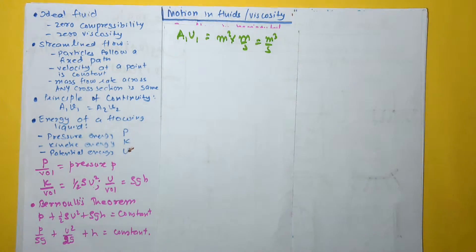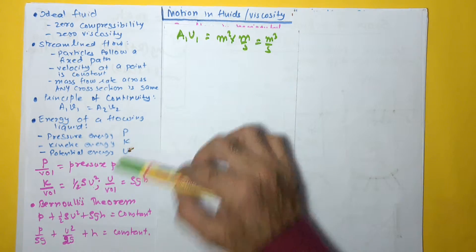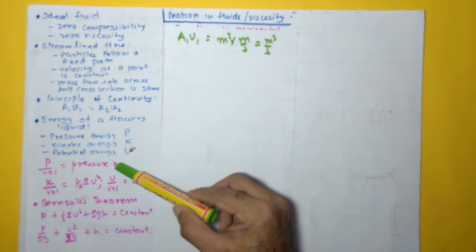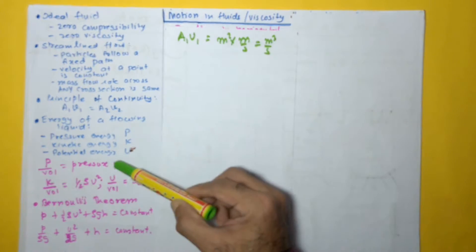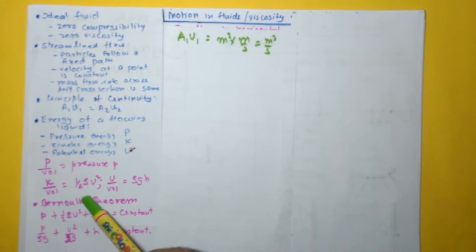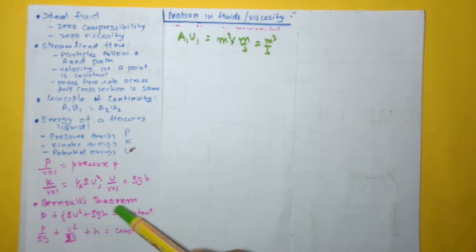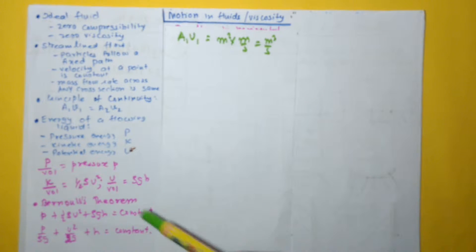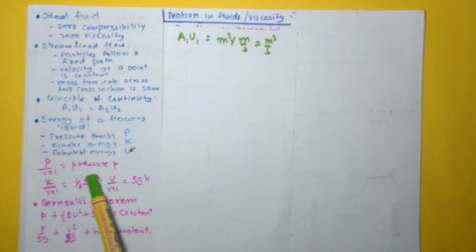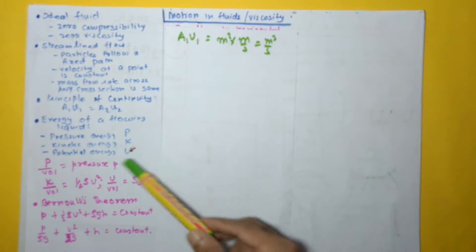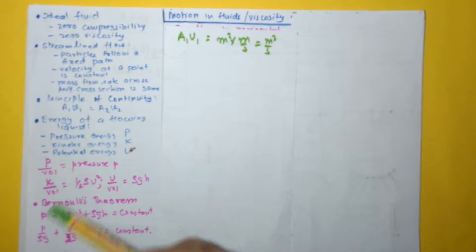Then we look at the energy of a flowing liquid. It has three energies: pressure energy, kinetic energy, and potential energy. Per unit volume, pressure energy equals the pressure P of the liquid (N/m²), kinetic energy equals ½ρv², and potential energy equals ρgh. All three have the same unit — energy per unit volume — so they are expressed in joules per meter cubed.